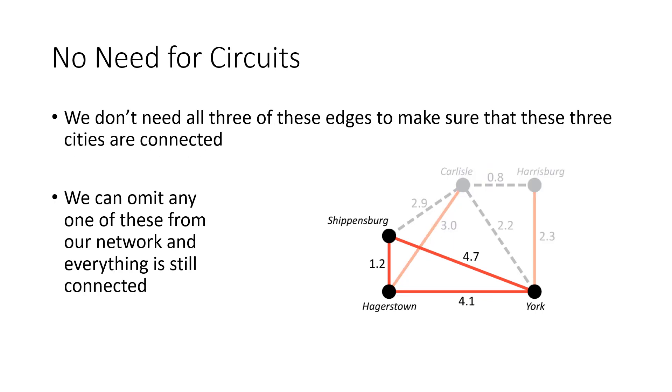So one thing we might notice about this potential solution is that if we focus in on these three towns—Shippensburg, Hagerstown, and York—if we build all three of those connections, then it's kind of unnecessary. We've built all of the direct connections between each of the three towns, but I could omit any one of those. Specifically, I would want to omit this expensive one between Shippensburg and York.